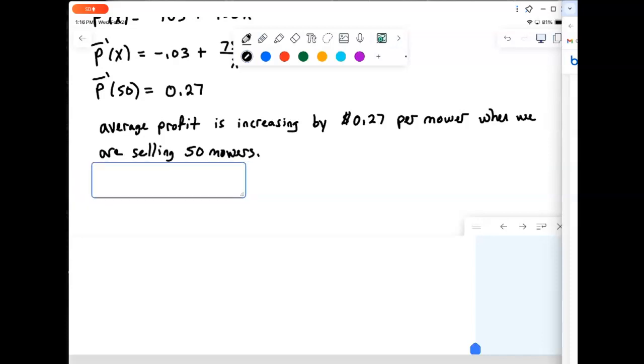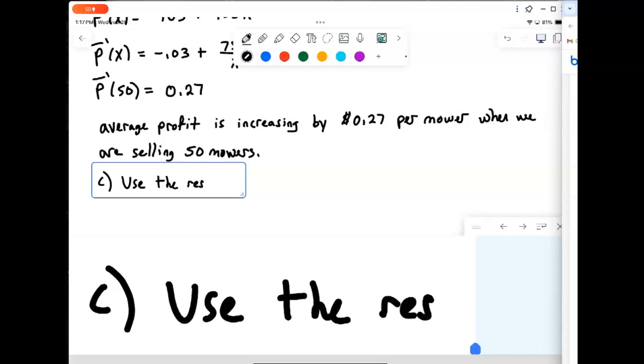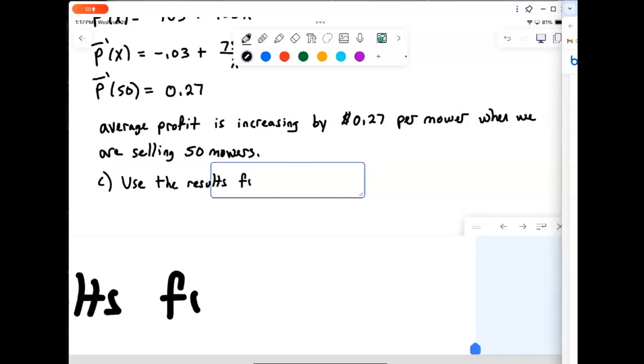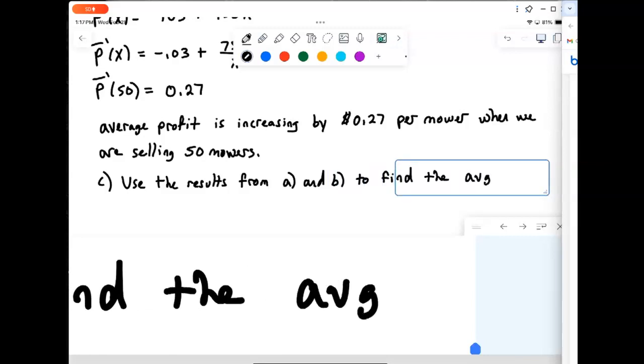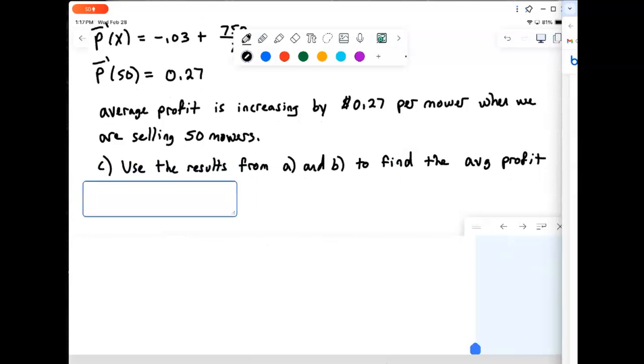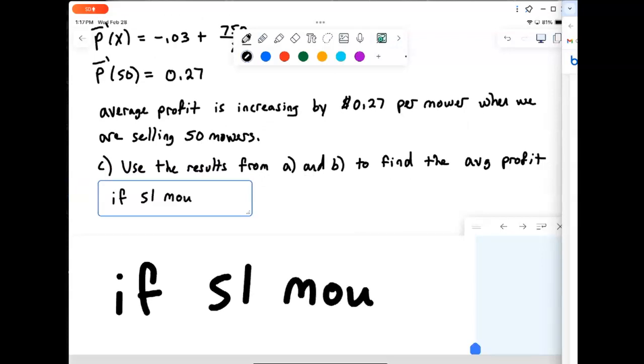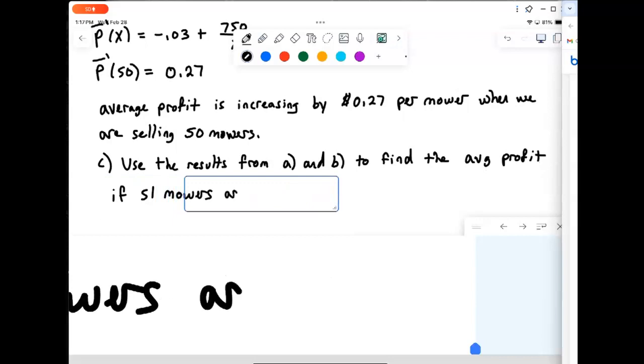And then finally we're asked one final part to this problem, and that is to use the results from parts A and B to find the average profit if 51 mowers are sold.